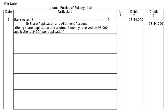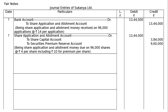Next entry — due entry for application and allotment collected together: Share Application and Allotment Account debited to Share Capital Account (96,000 shares × ₹4 = ₹3,84,000) and to Securities Premium Reserve Account (96,000 shares × ₹10 = ₹9,60,000). Being share application and allotment money due on 96,000 shares at ₹4 per share including ₹10 for premium per share.